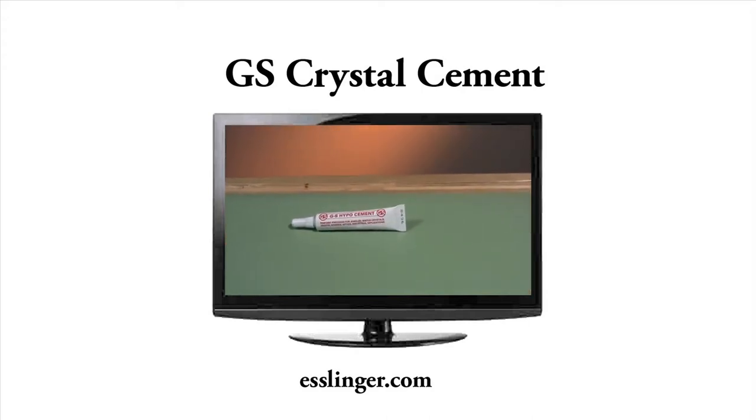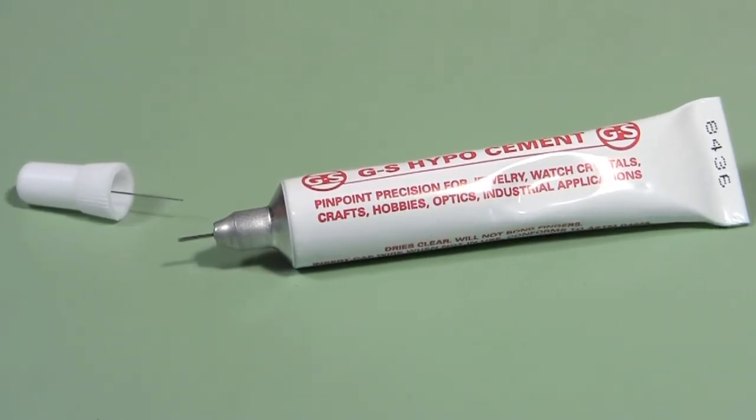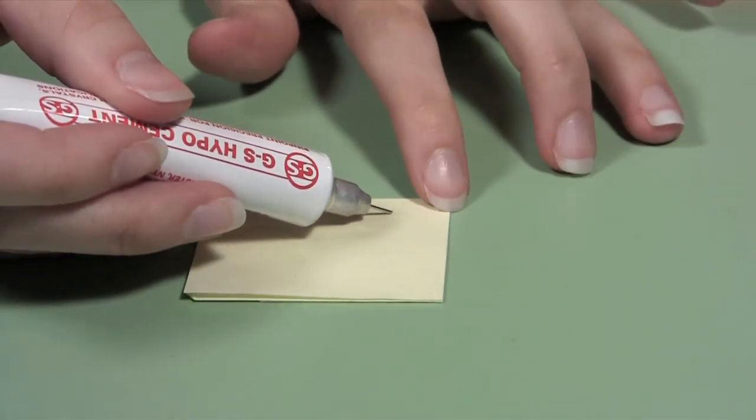Esslinger.com carries the professional strength adhesives that jewelers and watchmakers need. This GS Hypo Cement is a high quality jewelers and watchmakers glue designed to hold watch crystals in place and much more.